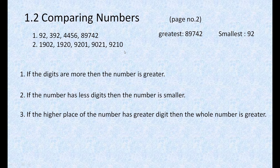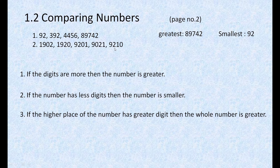But we want the greatest number, not just the greater number. Among the three numbers with 9 in the 1000s place, all three digits at the highest place are the same. So we have to compare the next place, which is the 100s place. At the 100s place, one number has 2, another has 0, and another has 2 again. So these two numbers with 2 are greater than the number with 0.